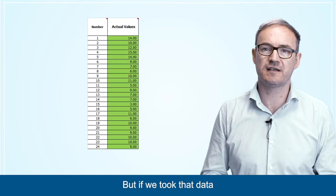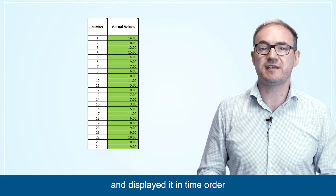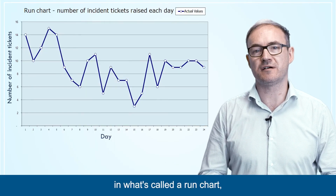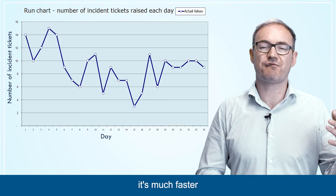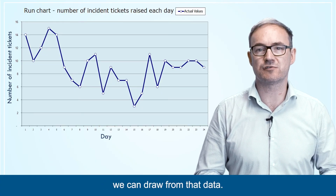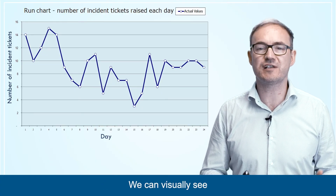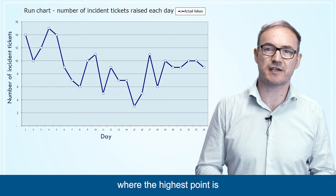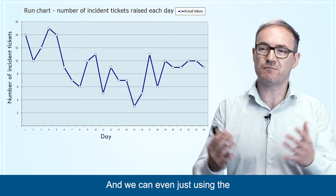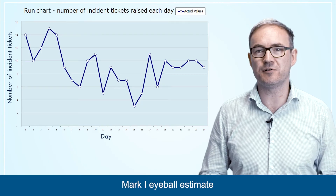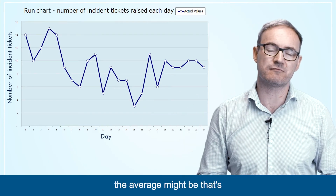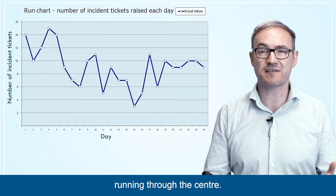But if we took that data and displayed it in time order in what's called a run chart, it's much faster for us to process the insights we can draw from that data. We can visually see where the highest point is and the lowest, and we can even just using the mark one eyeball estimate where we think the average might be running through the centre.